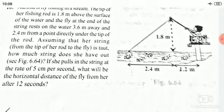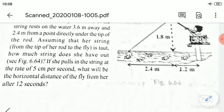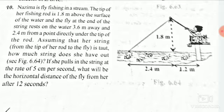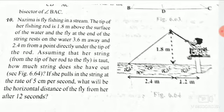What will be the horizontal distance of the fly from her after 12 seconds? The tip of the fishing rod is 1.8 meters above the surface of water, and the fly at the end of the string rests on the water 3.6 meters away, and 2.4 meters from the point directly under the tip of the rod.